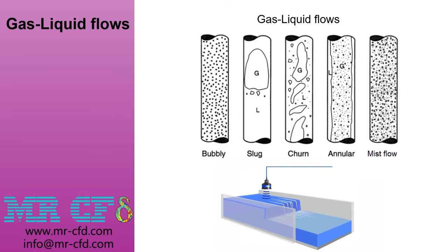One of the most common multiphase flows in nature is the combination of air and liquids. Based on the rate or entrance velocity of each phase into the domain, different types of regimes or flow formats are formed. For instance, you can see different types of flow regimes in a vertical pipe, and the two-phase flow of air and water is shown in an open channel. The formed regimes for liquid-gas flows are directly dependent on the shape of the domain and each phase's inflow rate. In the next two slides, we will investigate the most famous regimes for vertical and horizontal pipes.